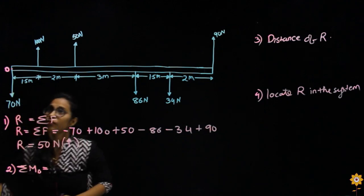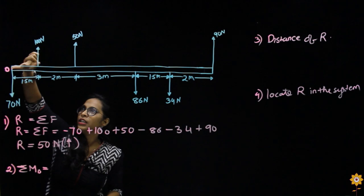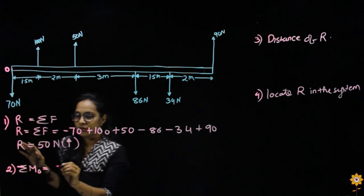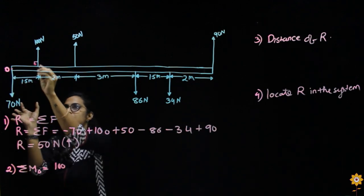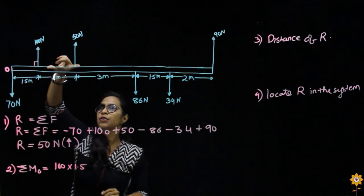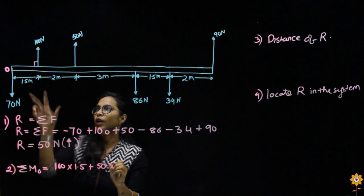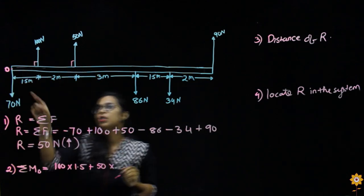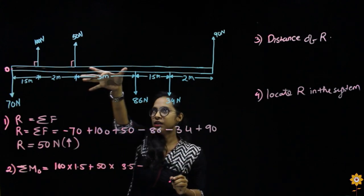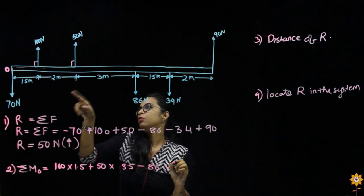The next force going upward is 100 Newton, which produces an anticlockwise moment — taken as positive. So it would be 100 into 1.5. The next force is 50 Newton, also in the anticlockwise direction, so it is positive: 50 into 3.5. Then the next force is 86 Newton in the clockwise direction, so it would be minus 86 into 6.5.